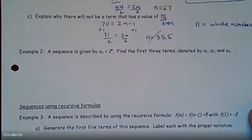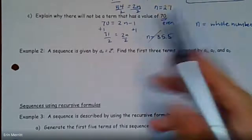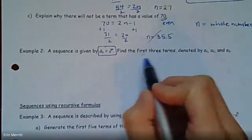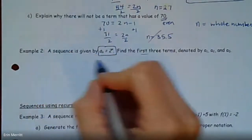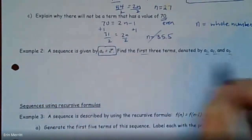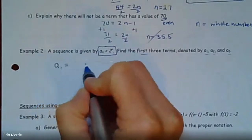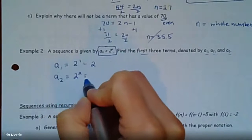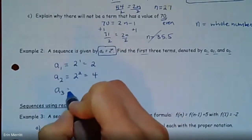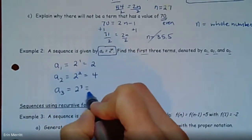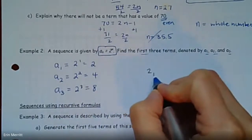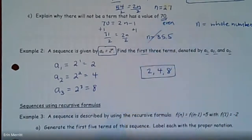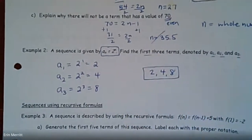For example 2, we have a different explicit formula. It's just saying let a sub n equal 2 to the n power — find the first three terms. So you're going to plug in 1, 2, and 3. A sub 1 would be 2 to the first power, or 2. A sub 2 is 2 to the second power, which is 4. A sub 3 is 2 to the third power, which is 8. So there's your first three values. Easy — just use the formula and plug in.